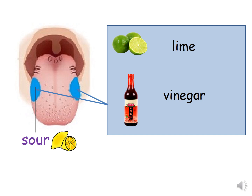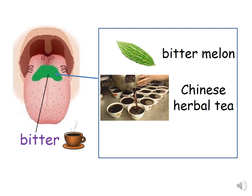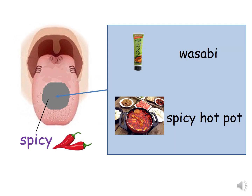Sour. Bitter. The blue area on your tongue is where you taste bitter food and drinks like bitter melon, Chinese herbal tea and coffee. Spicy. The grey area on your tongue is where you taste spicy food like chilies, wasabi and spicy hot pork.